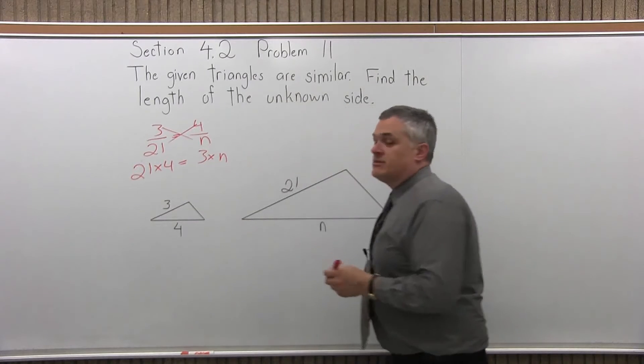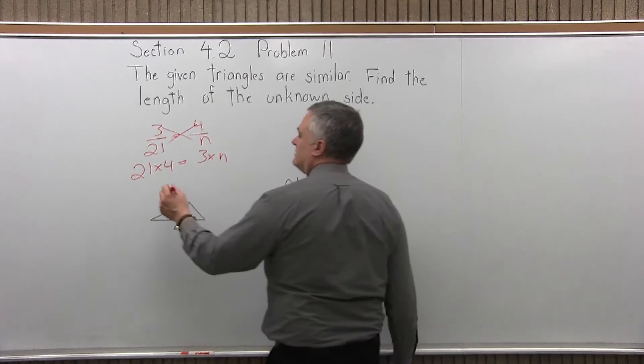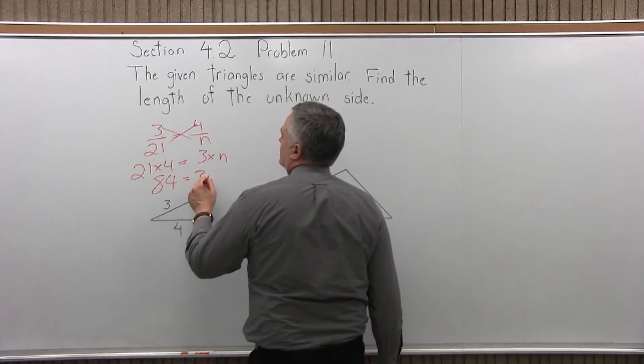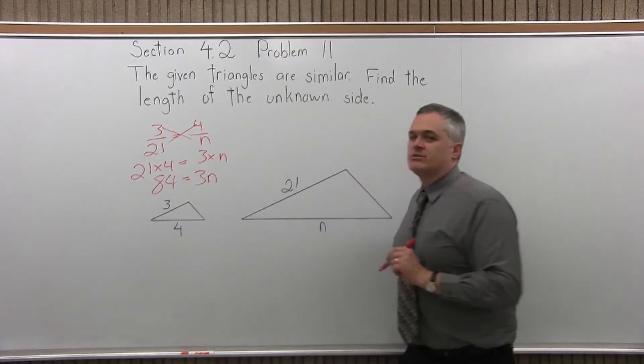So 21 times 4 is 84, and 3 times N we'll just call 3N. So 84 equals 3N.